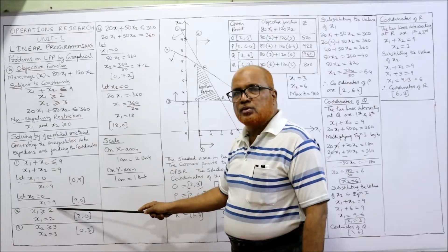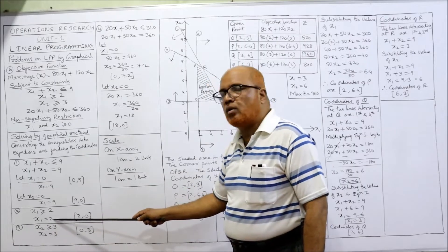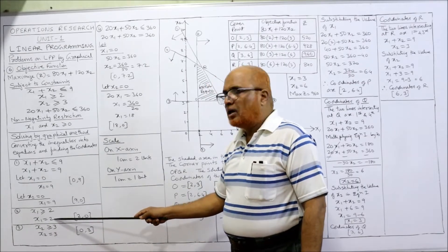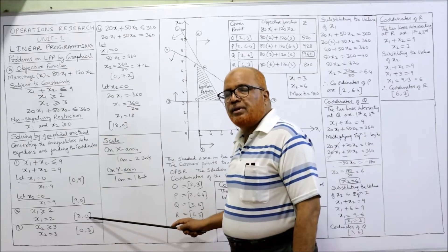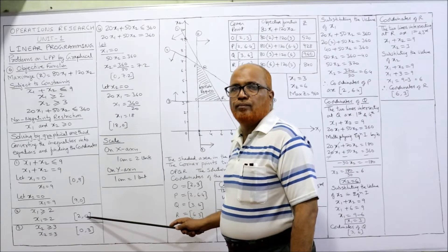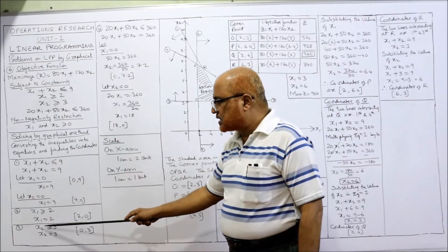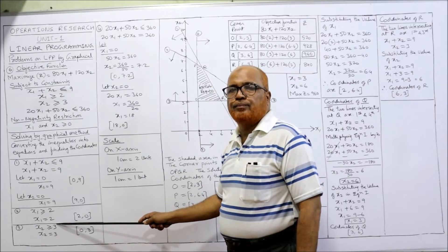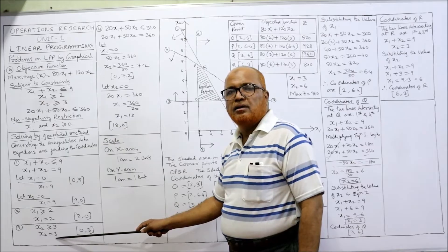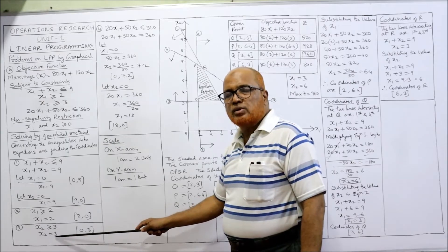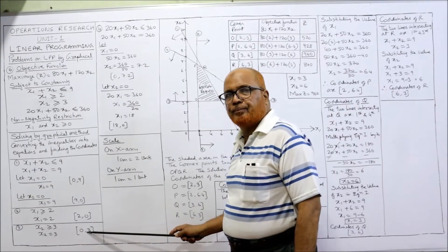Second equation: x1 ≥ 2, so making x1 = 2. When x1 = 2, x2 = 0. Third: x2 ≥ 3, so making x2 = 3. When x2 = 3, x1 = 0 — coordinates (0, 3).